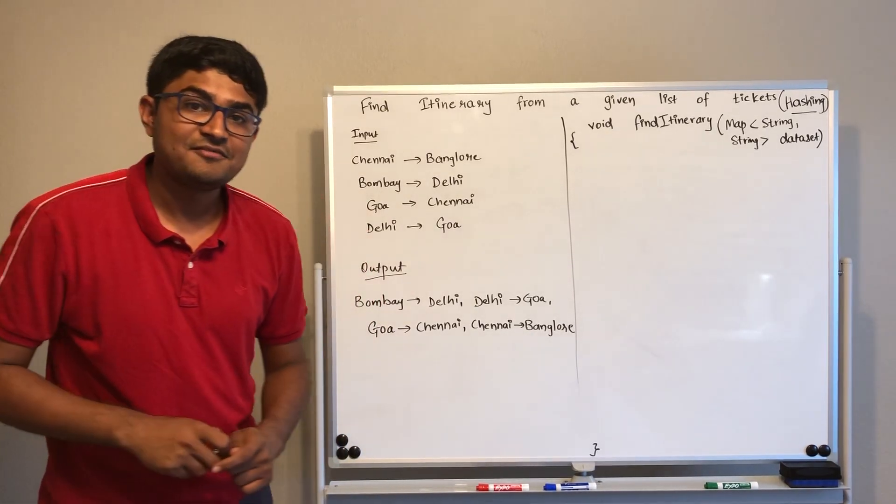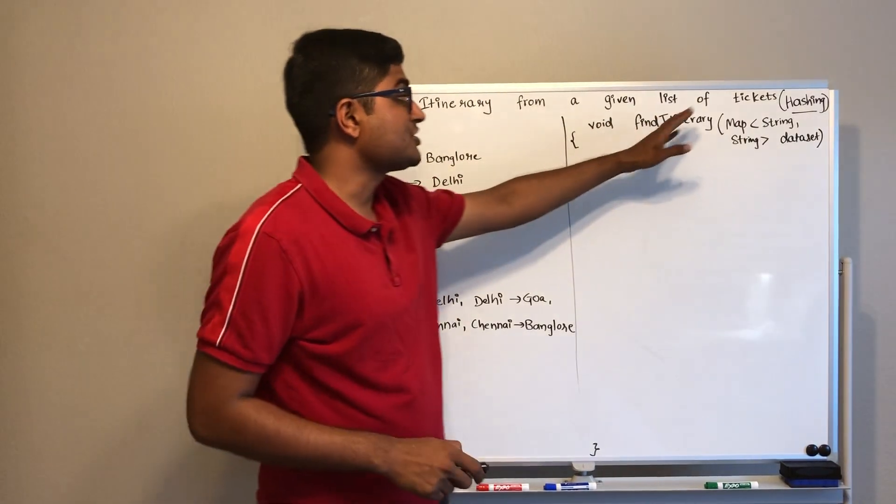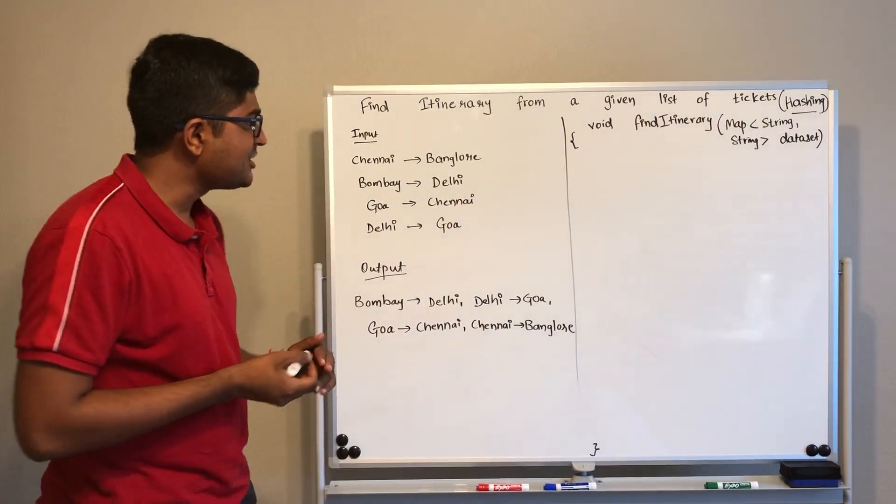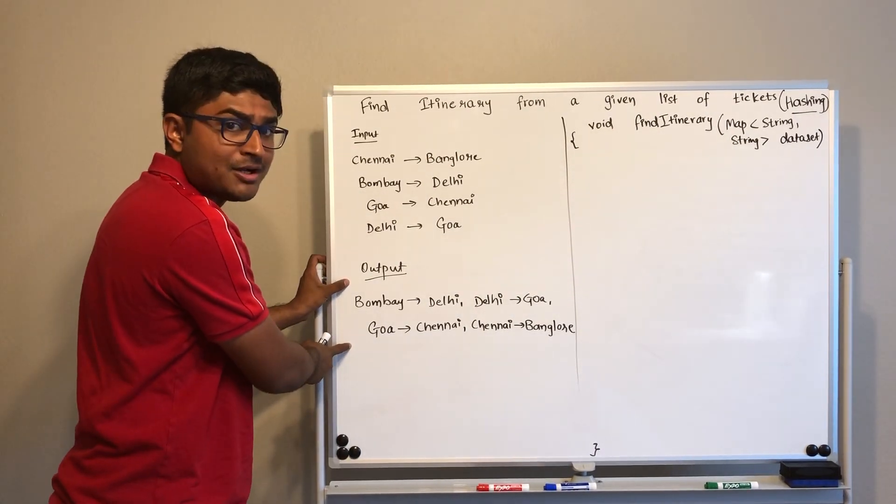Hi there, today we are going to solve the problem of finding an itinerary from a given list of tickets. The idea here is you'll be given a list of tickets as input and you'll have to find the output path.